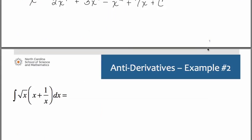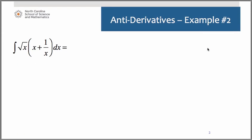Let's try another one. Now as we go through these, if you think you're getting pretty good at them, please feel free to pause this video, try it on your own, then restart it to see how you did. This is a problem in which we're going to have to algebraically manipulate it. We're going to have to rewrite the square root of x as x to the one half, and distribute it across the quantity x plus one over x.